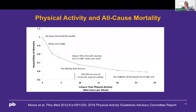This was the evidence we did have: a pooled analysis of six different prospective cohort studies. This figure from the guidelines shows that about 70% of the benefit was reached at about 8.25 MET-hours per week. If you look at the range of 150 to 300 minutes of moderate activity, that's the sweet spot where the recommendations are. In the top left it says there's no lower threshold for benefit — this was highlighted in the guidelines: any activity is good, and even if you don't hit 150 minutes, you're still getting benefit from physical activity.